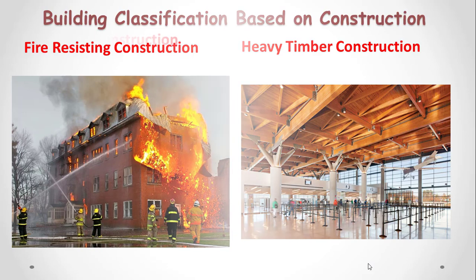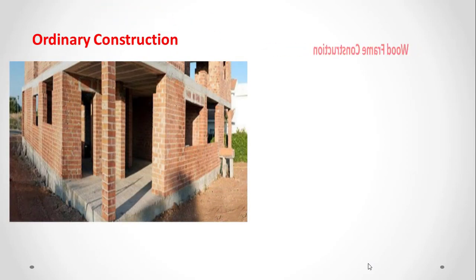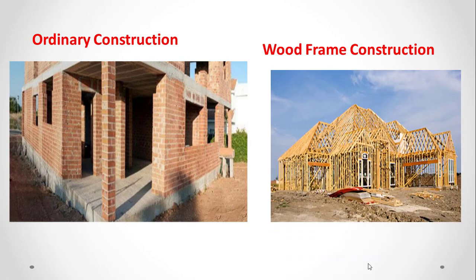Another type is ordinary construction, where exterior walls are made of masonry or other non-combustible material, and ordinary materials can be used throughout. The third type is wood frame construction, in which practically all of the building is constructed out of wood or other combustible materials.